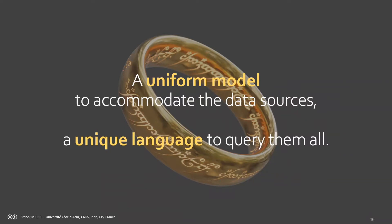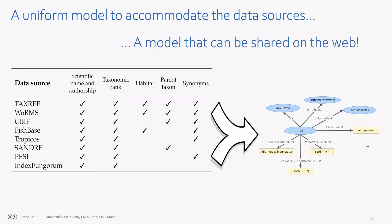In the WMMIX team we proposed a method to integrate data from different web data sources using semantic web technologies. The idea — for those familiar with Tolkien, it sounds a bit like the Lord of the Rings — is to have a uniform model that accommodates all data sources and a unique language to query them all. That uniform model is RDF, the conceptual graph data representation of the semantic web, and the unique query language is SPARQL, the W3C standard for querying RDF graphs.